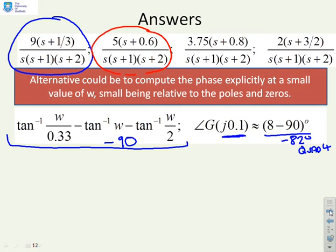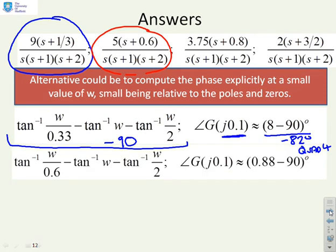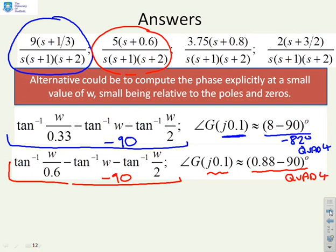What about this one then? 5 times (s+0.6)/(s)(s+1)(s+2). Again I simply write out the argument explicitly. There it is: tan⁻¹(ω/0.6) - tan⁻¹(ω) - tan⁻¹(ω/2), and again there'll be a minus 90 because of the integrator. Substitute in ω = 0.1 and I get 0.88 minus 90, which again is in quadrant 4.